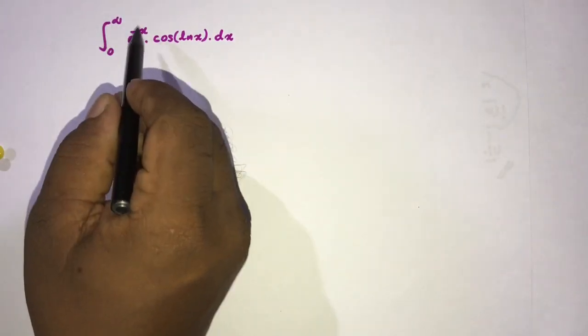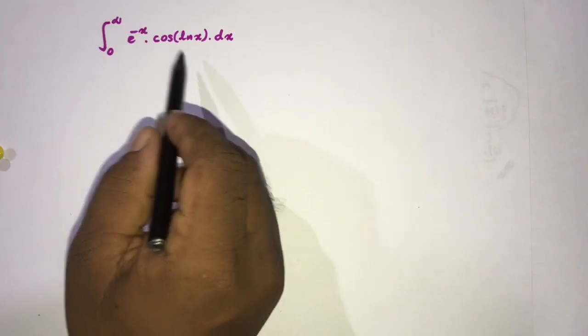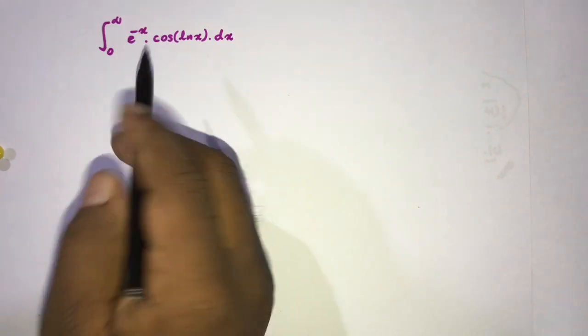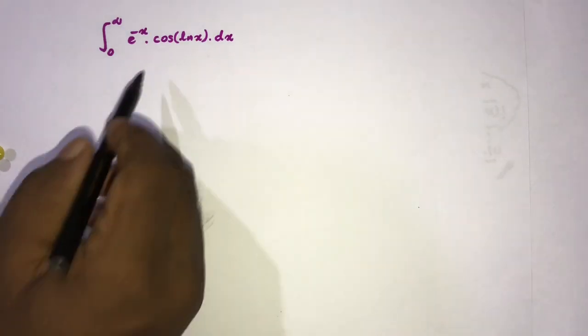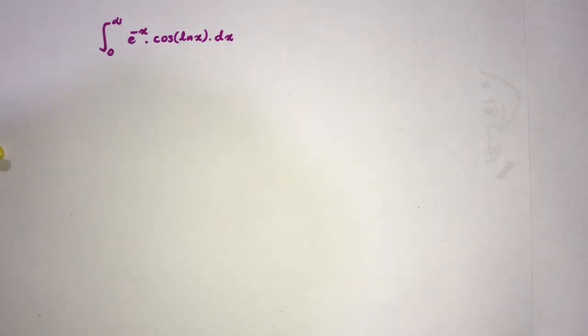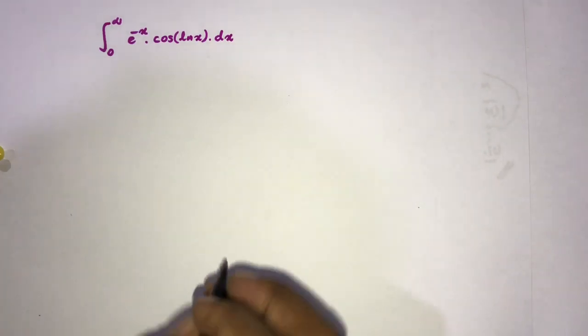Welcome to the Mathematics Mi channel. In this video we are going to evaluate another interesting integral: the integral from zero to infinity of e to the minus x times cosine of natural log of x dx. This morning I watched a video on how to calculate i factorial, published by the Black Pen Red Pen YouTube channel, and while watching that video I saw this integral.